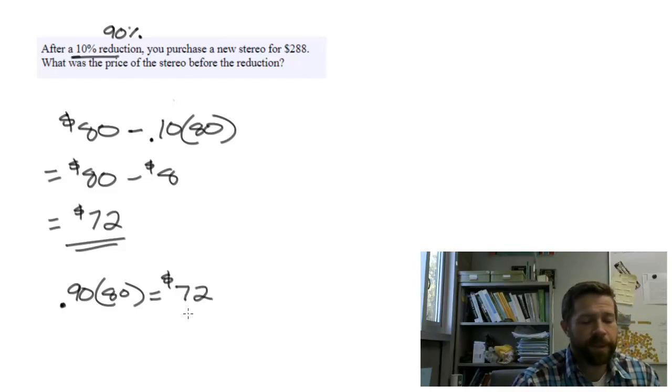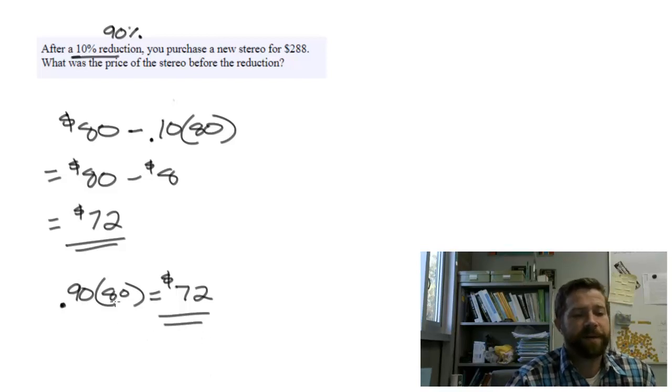This new technique is important—this is the move we're going to need to create the equation. So 90% of $80 gives us $72.